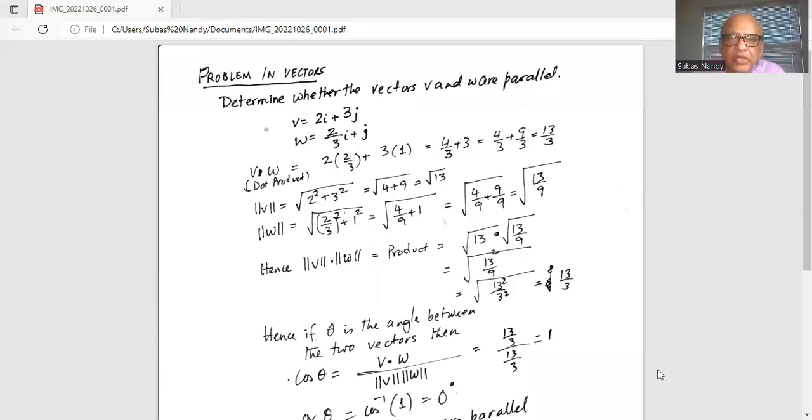Determine whether the vectors v and w are parallel. v is given as 2i plus 3j and w is two-thirds i plus j. So v dot w, the dot product.